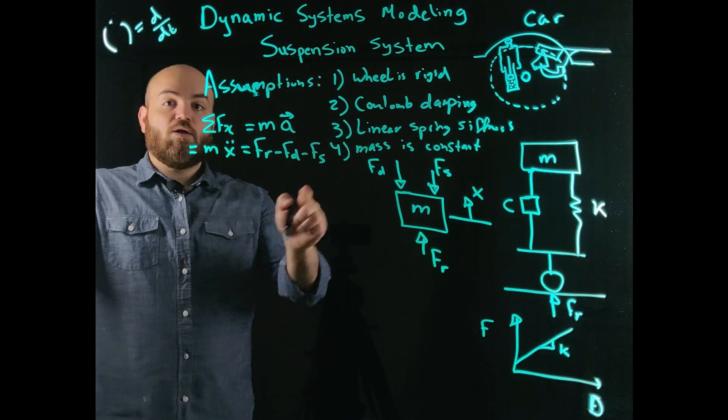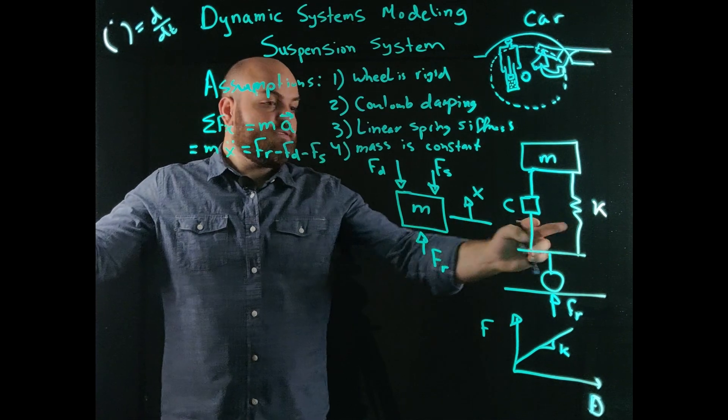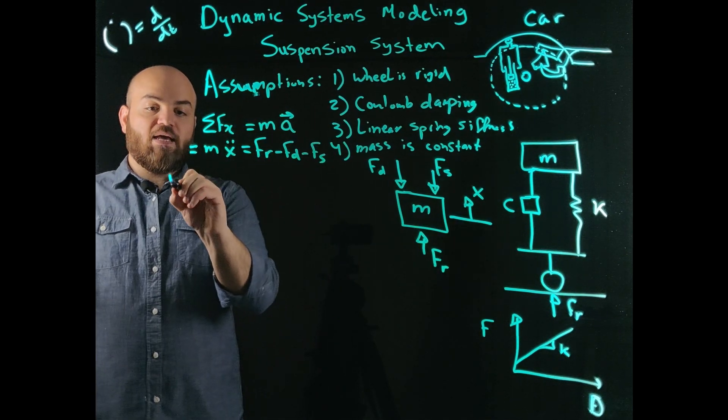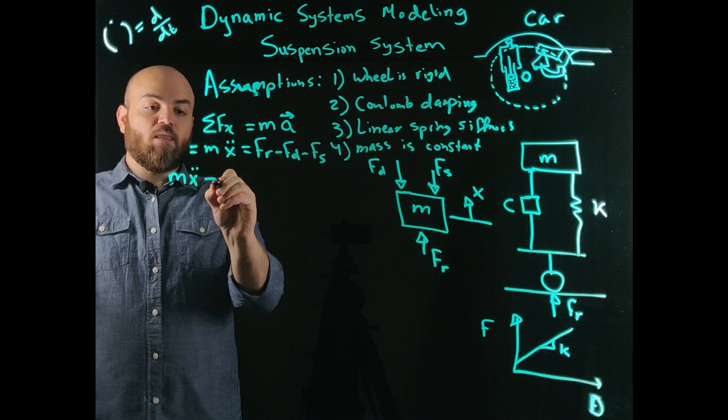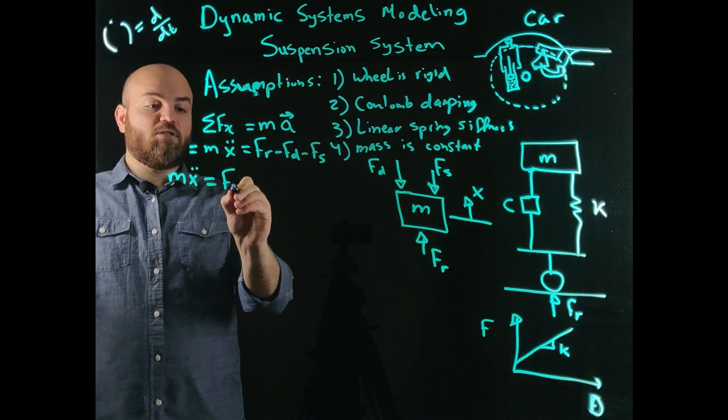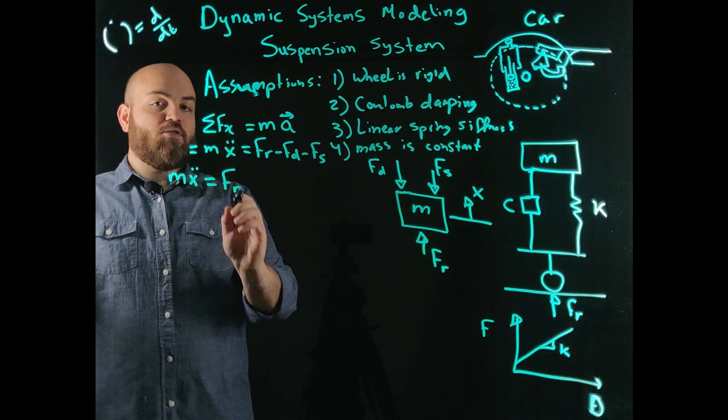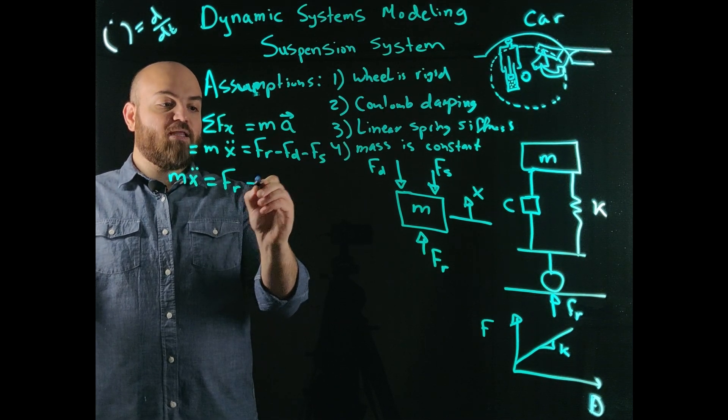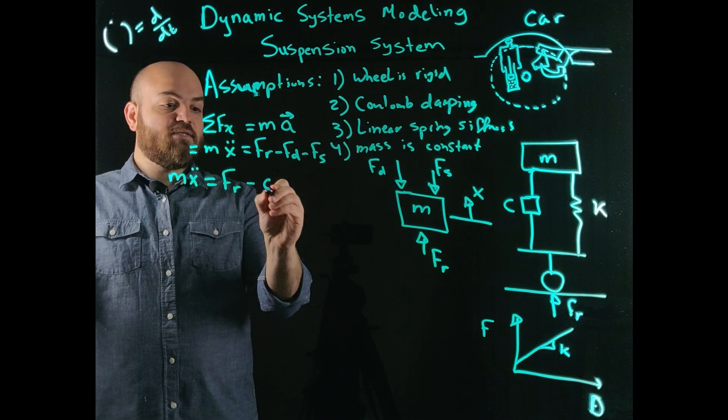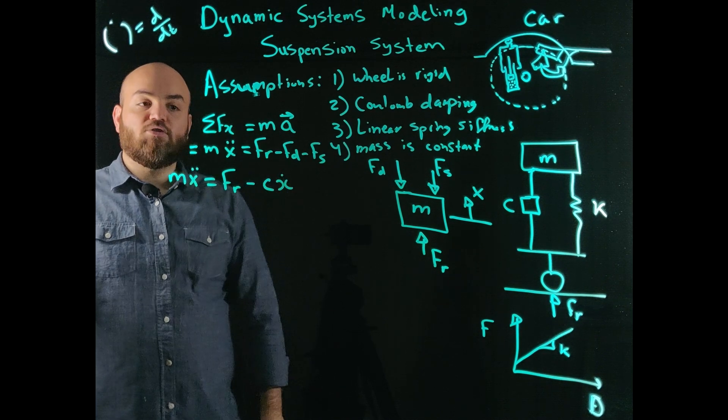The damping force and the stiffness force from the spring will operate with a negative. So like I said, with our idealized components, we are assuming that this is the road normal force. We're assuming that this damping force is C times X dot. So this is Coulomb damping.